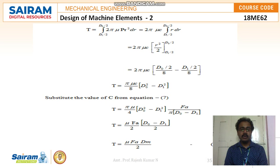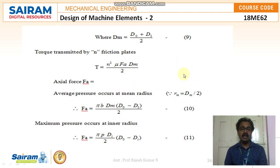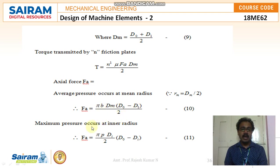Substituting the value of c: T = (pi*mu / 4) * (do² - di²) * Fa / (pi*(do - di)). Further simplification gives T = mu * Fa * (do + di) / 4, which equals mu * Fa * dm/2, where dm is the mean diameter. For uniform wear theory, dm = (do + di) / 2. For n friction plates: T = n' * mu * Fa * dm / 2. The axial force Fa = pi * b * dm * (do - di) / 2, and maximum pressure occurs at inner radius: Fa = pi * p * (di/2) * (do - di).